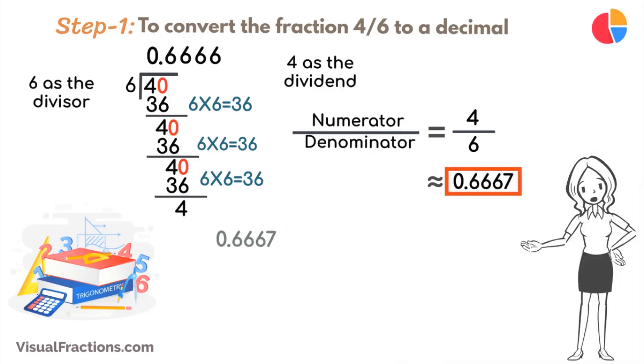Now, to convert 0.6667 to a percent, we simply multiply it by 100, resulting in approximately 66.67%.